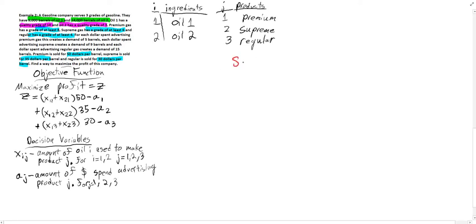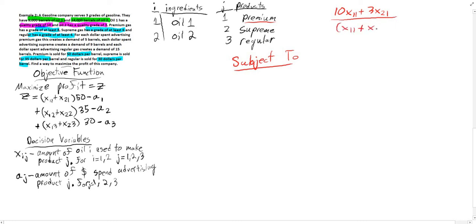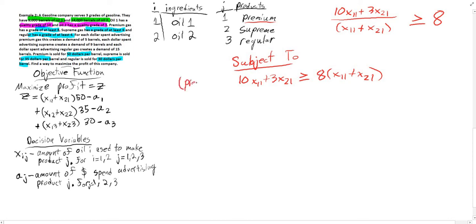Now we're going to do our constraints — subject to. The quality grade constraint for premium: the grade given for the gas over the total amount of gas has to be greater than or equal to 8. Written more succinctly: 10·X_11 + 3·X_21 ≥ 8·(X_11 + X_21). This is our premium blend constraint.